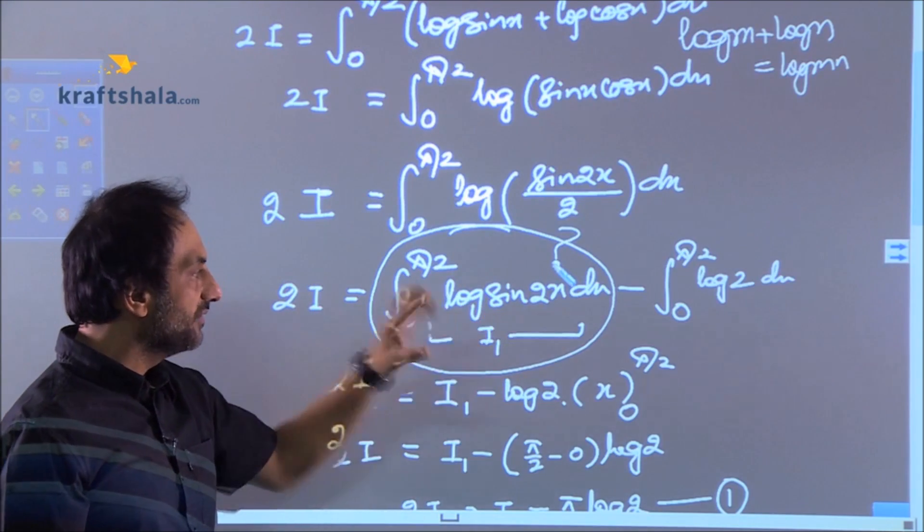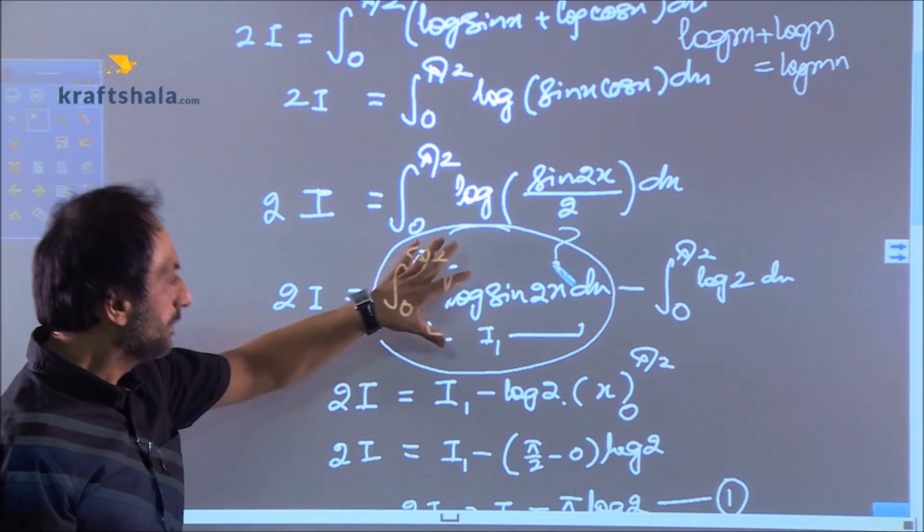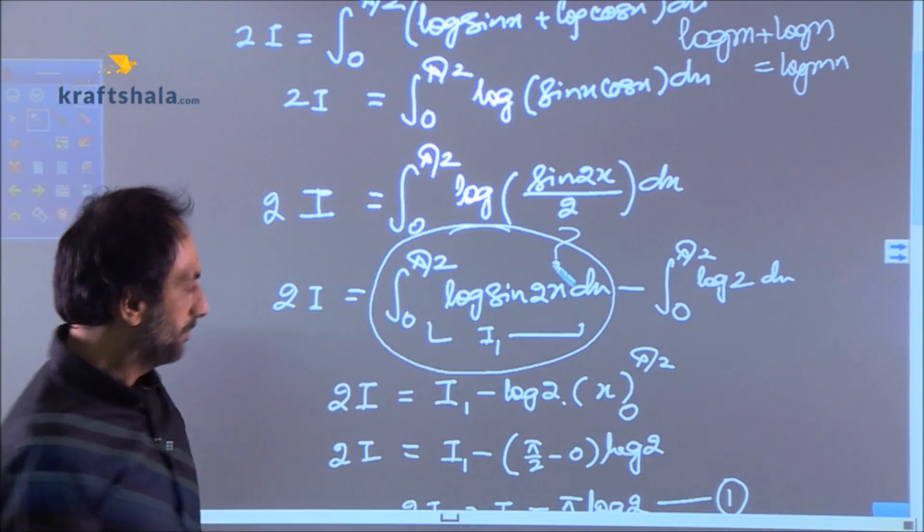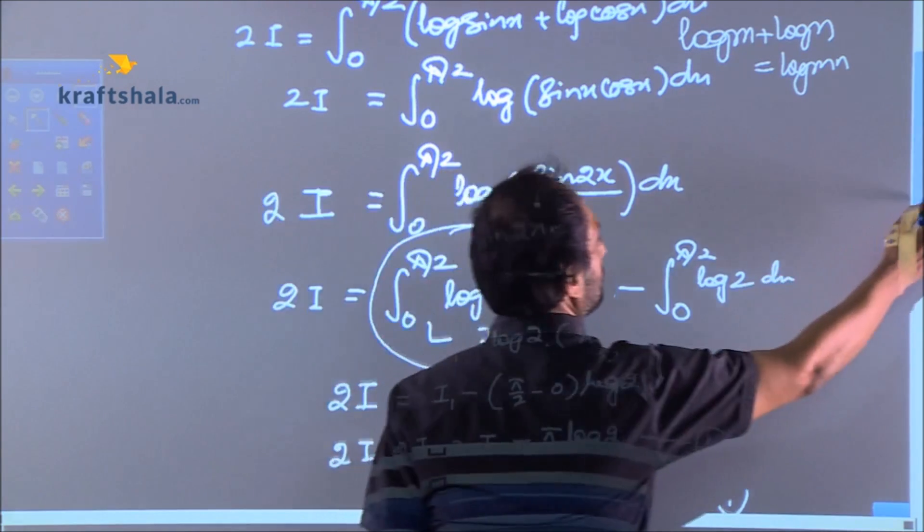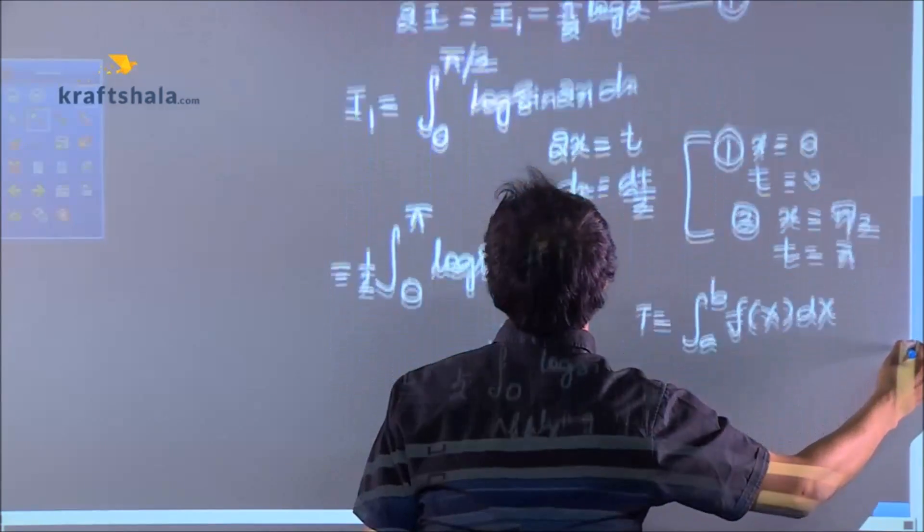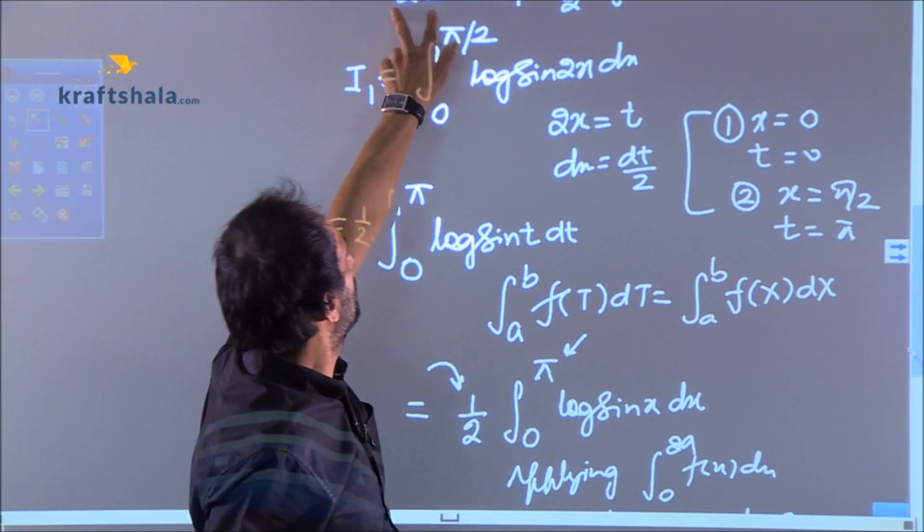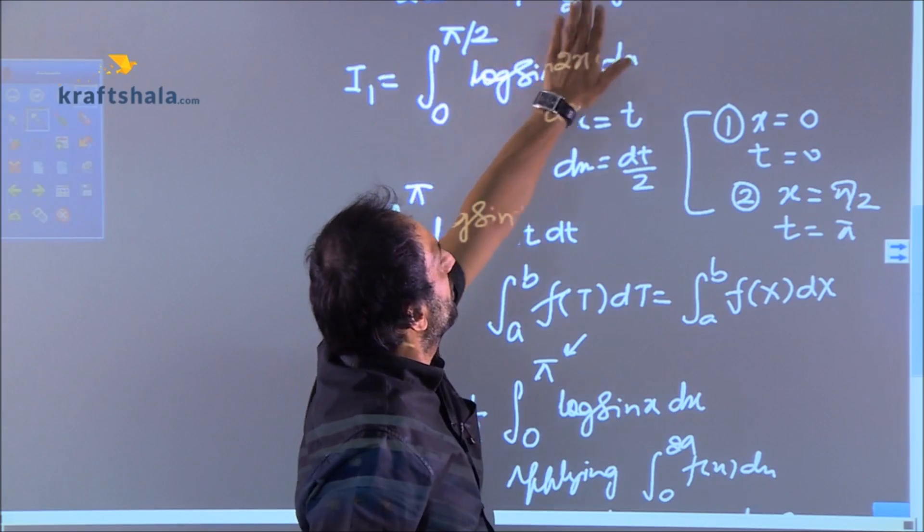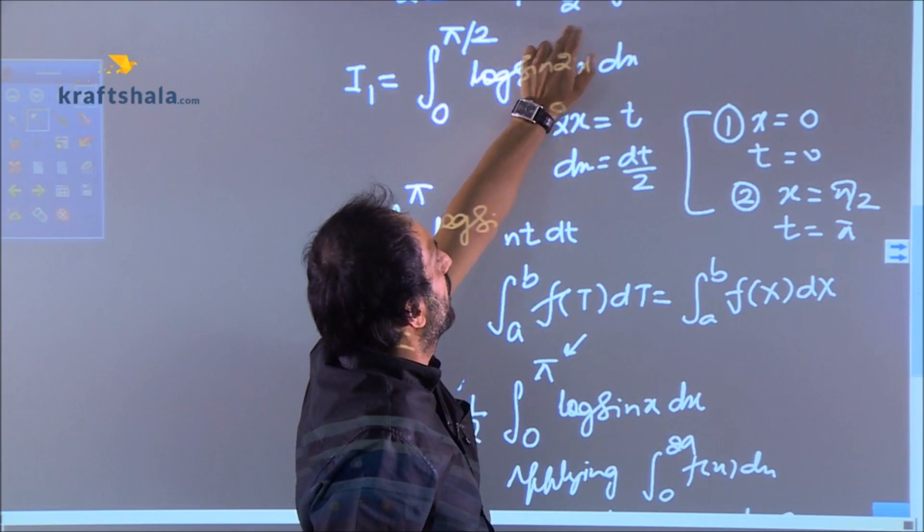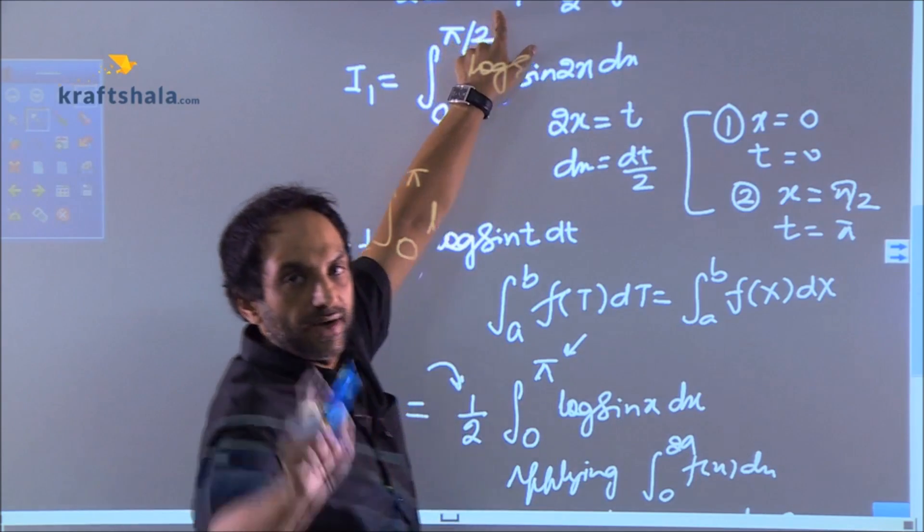We'll take this as I₁ and we'll work on this. I'm taking this as I₁. So now, and before that we have 2I and the integration of that second part is now minus π/2 log 2. So only this I₁ is a trouble.